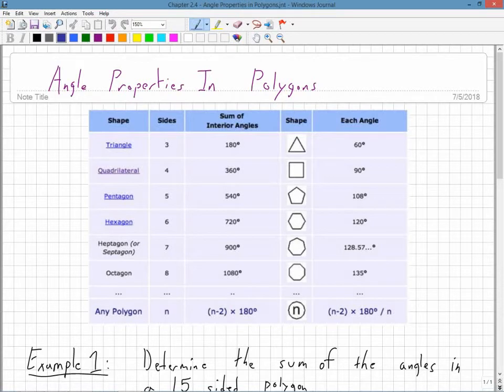Angle properties in polygons. If we look at this chart here, we can see we already know that a triangle has a sum of 180 for all the angles. If it is an equilateral triangle, which means all the sides are equal, then each angle will be 60.